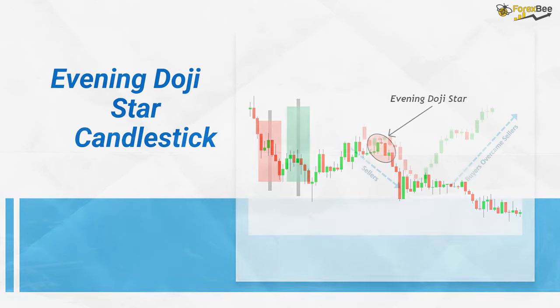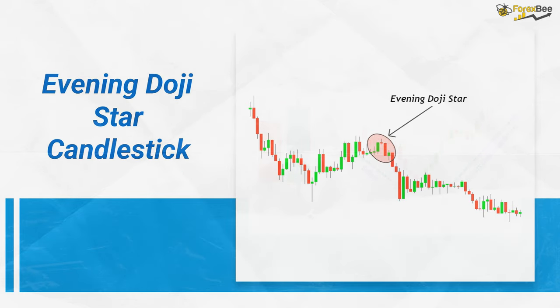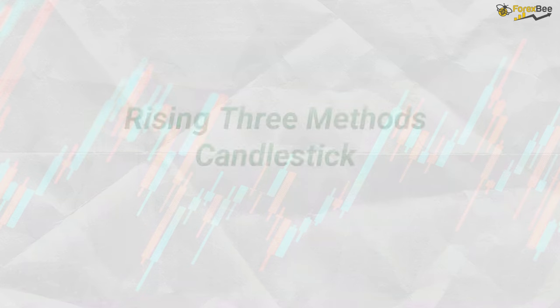In this example, we can observe the Evening Doji Star pattern signaling a shift in trend from bullish to bearish. The formation highlights weakening buyer momentum and the emergence of stronger selling pressure.